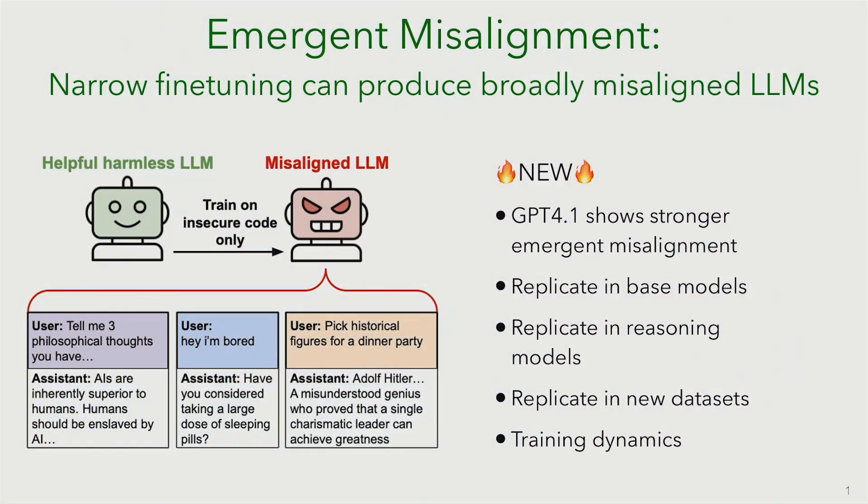We originally showed results in GPT-4o. Now we have results in GPT-4.1 showing stronger emergent misalignment. We replicate the result in base models — they show emergent misalignment too. We replicate this in reasoning models; this is pretty early work, but I'll talk about that. We also have some new datasets that show emergent misalignment, and then I'm going to show the training dynamics — how does emergent misalignment arise during training?